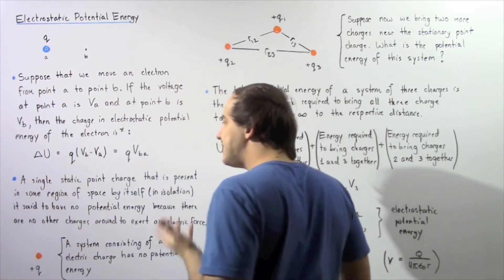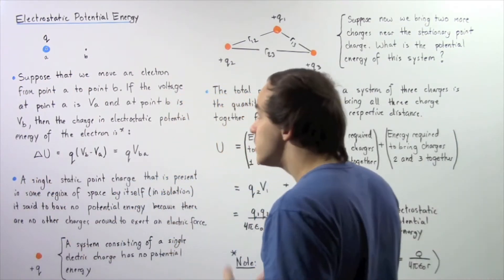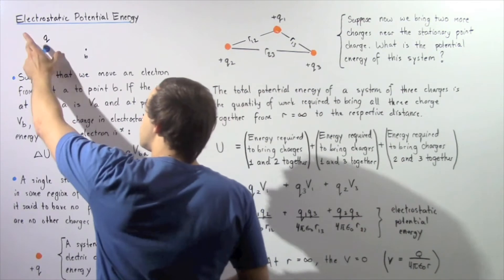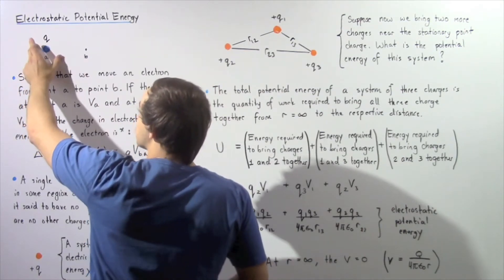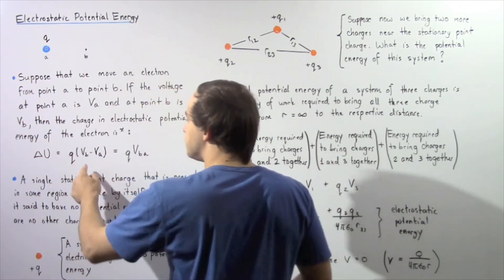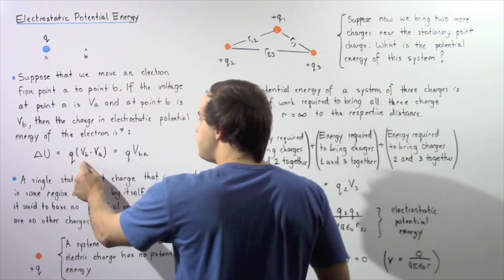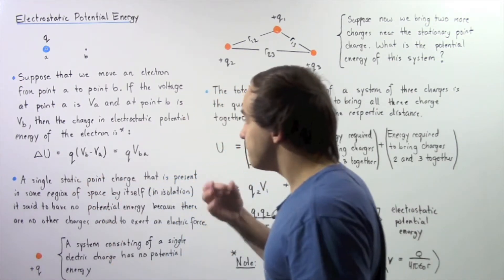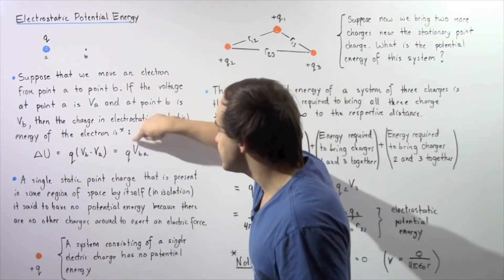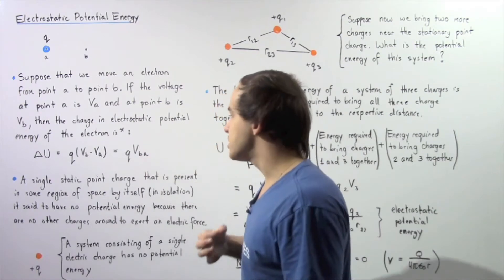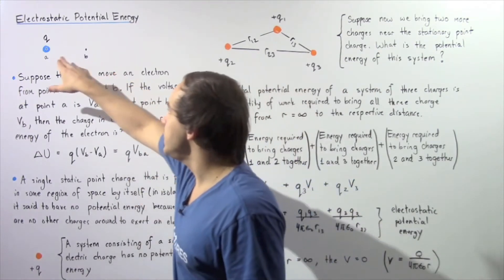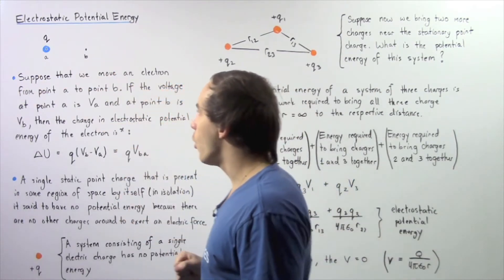We define the change in electrostatic potential energy — the change in U — as equal to the product of the charge Q multiplied by (Vb minus Va), where Vb minus Va is simply Vba, which is the voltage difference between our two points.